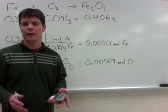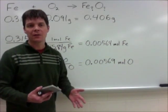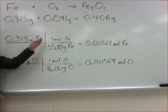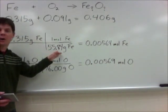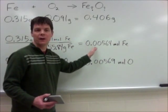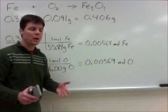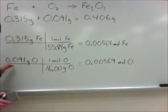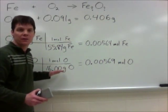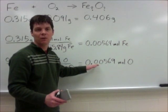So I just finished calculating the mole values for each element present in this compound. I took the mass of iron present, 0.315 grams of iron, and divided that by 55.84 grams to calculate a mole amount of 0.00564. I've also calculated the number of moles of oxygen. To do that, I took the mass of oxygen, 0.091 grams, divided by the molar mass of 16 to come up with a value of 0.00569.